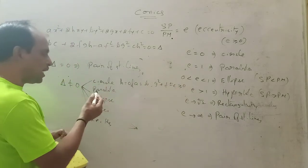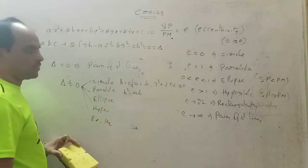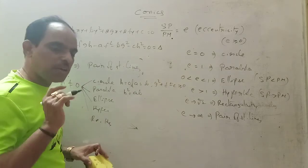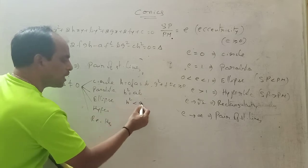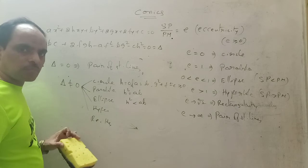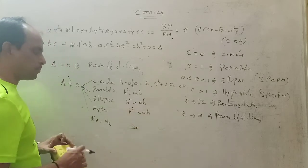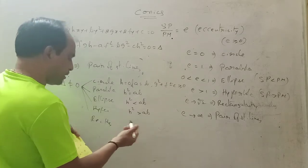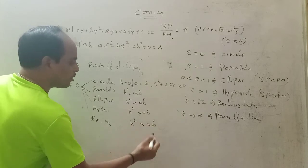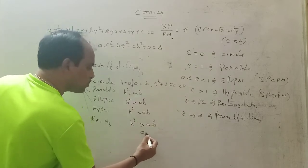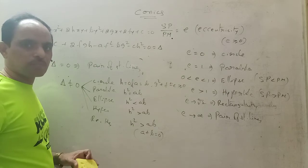For a parabola: h² = ab. For an ellipse: h² < ab. For a hyperbola: h² > ab. For a rectangular hyperbola: h² > ab and additionally a + b = 0.